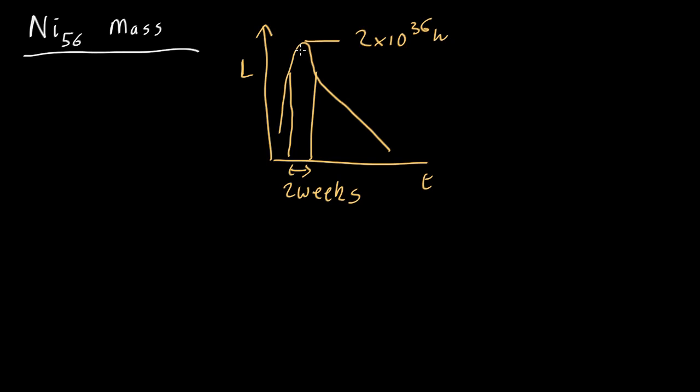This is caused by the nickel turning into cobalt which generates 1.7 mega electron volts for every atom, whereas actually the bulk of the power is down here which is going from cobalt to iron, but let's just look at the peak here for the purposes of this calculation.